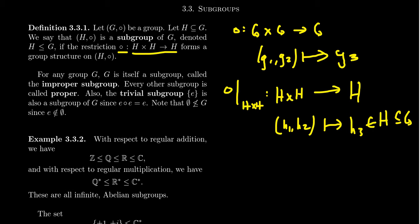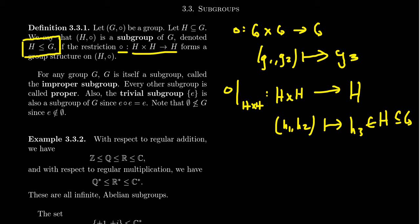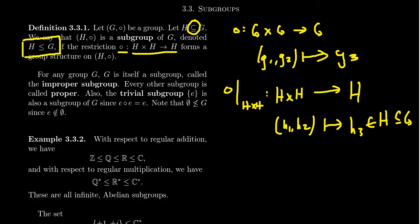We commonly denote that H is a subgroup of G using the symbol H less than or equal to G. The curly version denotes H is a subset of G, but when it comes to a point, that indicates H is a subgroup — that is, it is a group in its own right, a group sitting inside of this larger group.